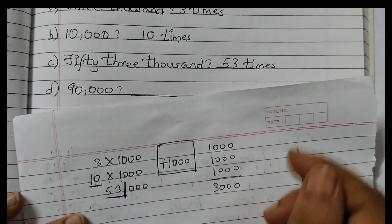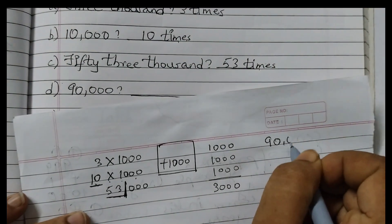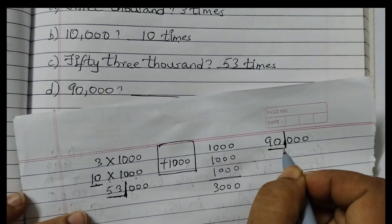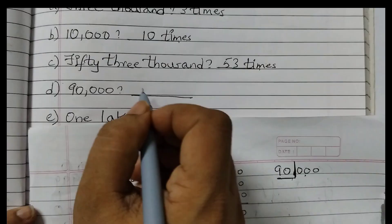90,000. Same way we can do 90,000. So just put a line like this and the answer is 90. 90 times 1000.